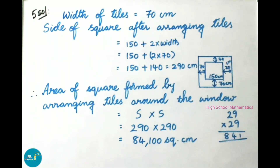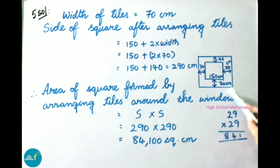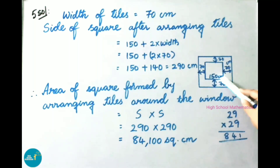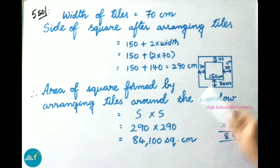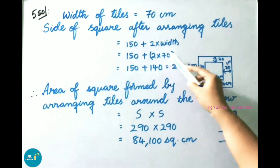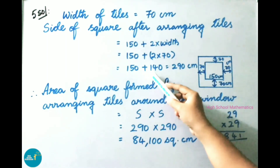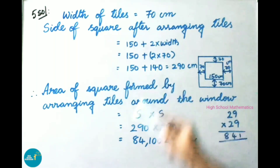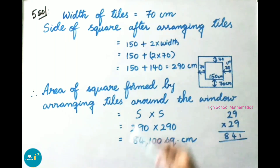They have given width of tiles is 70 cm. Now we are going to find the side of the square after arranging the tiles. Side of outer square equals 150 cm plus 2 times width, that is 150 plus 2 into 70, which equals 150 plus 140, giving 290 cm.